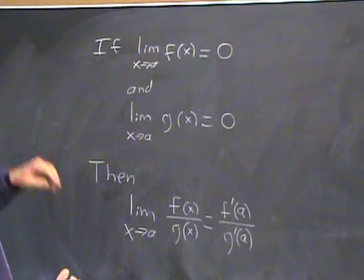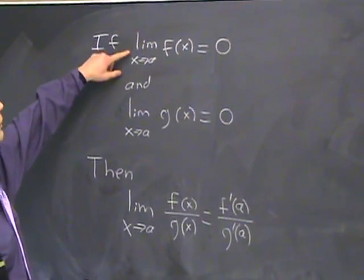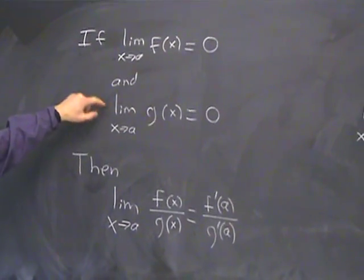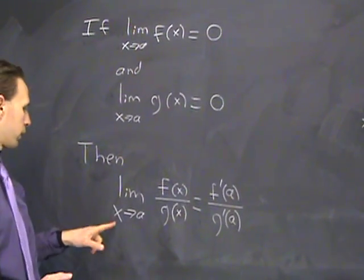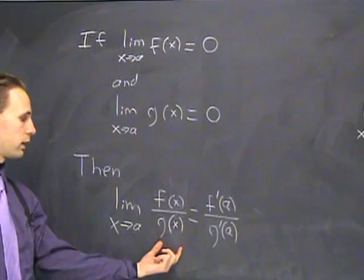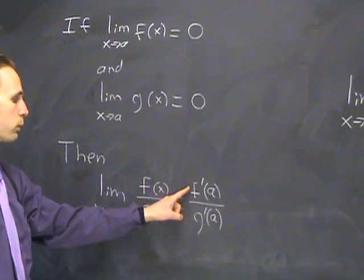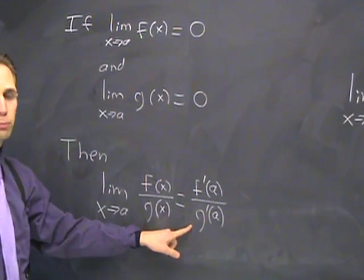Loosely speaking, it says that if the limit of f as x goes to a is 0, and if the limit of g as x goes to a is 0, then the limit of their quotient as x goes to a can be gotten by evaluating their derivatives top and bottom and just plugging in a.